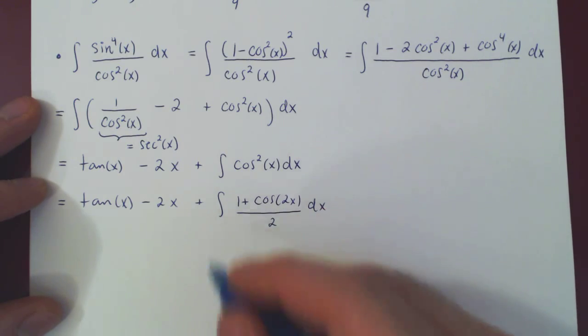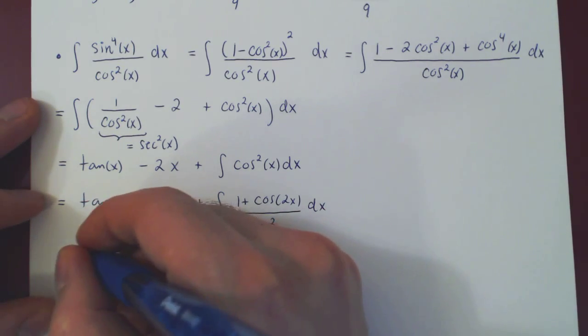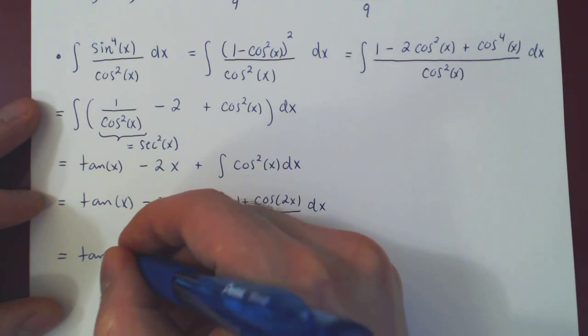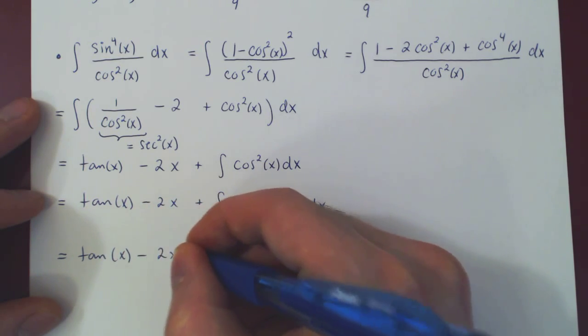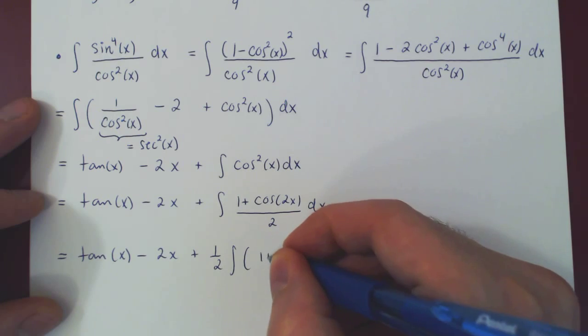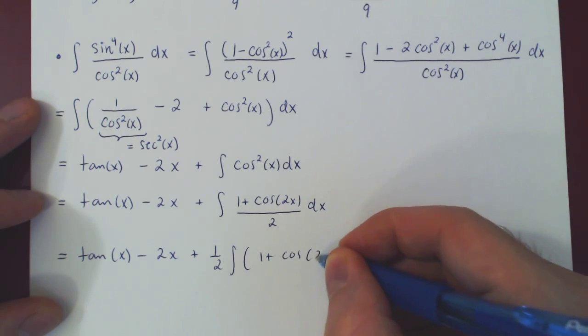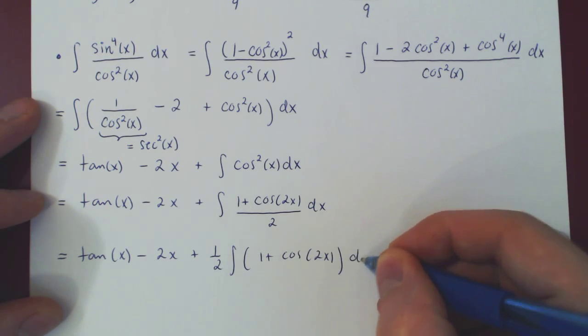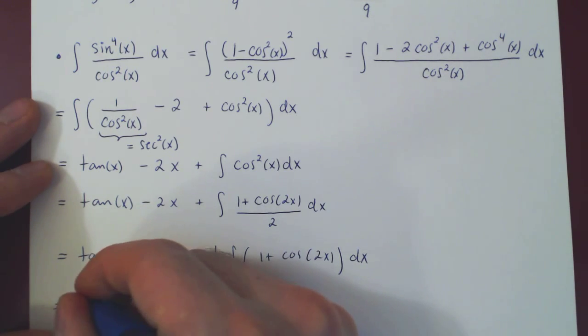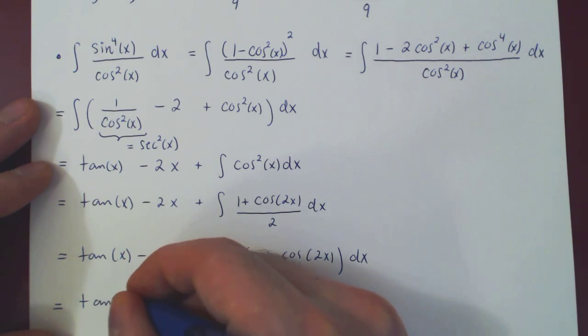The half angle formula is that cos squared of x is 1 plus cos of 2x over 2. As always I will factor the 1 half outside as a scalar multiple.